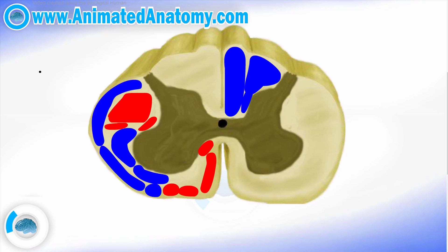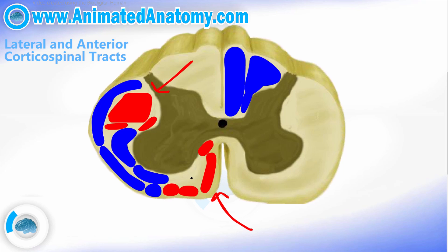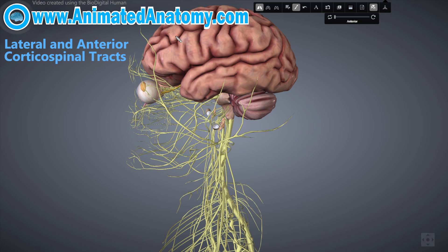Now we should start explaining the functions and where these tracts come from and where they go. Having explained the names and positions of these tracts, I'd like to proceed to explain where they come from and what they do. I'd like to start with the motor and the descending or efferent pathways. Here we had the lateral corticospinal tract and the anterior corticospinal tract — they belong to the pyramidal tracts.